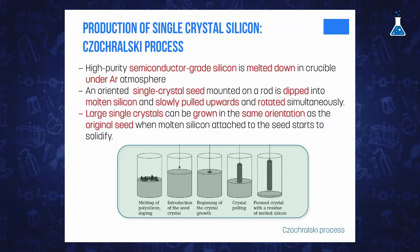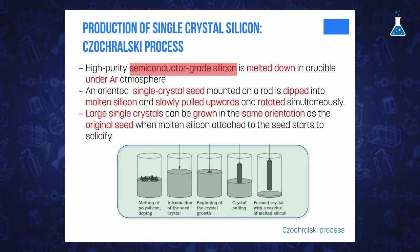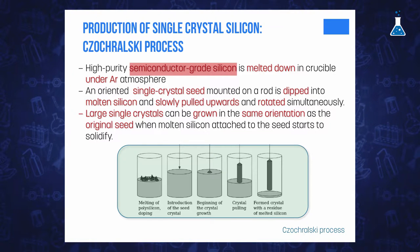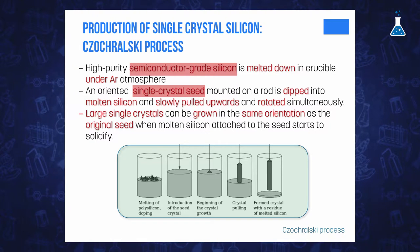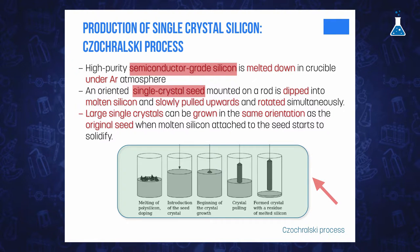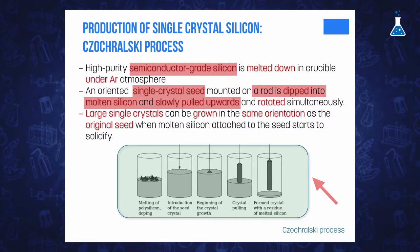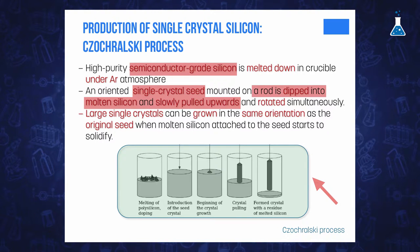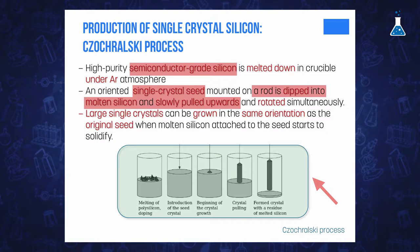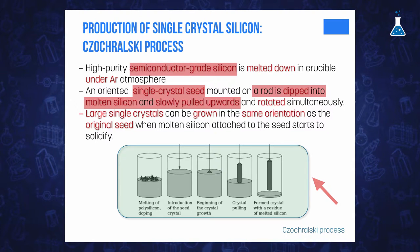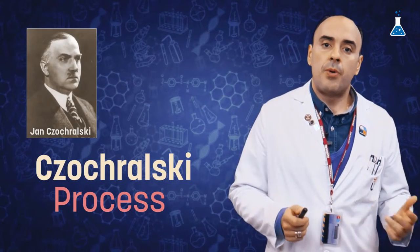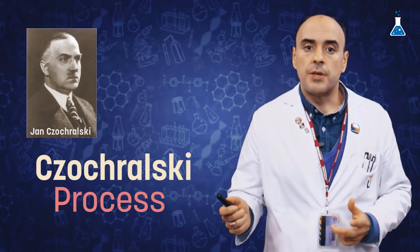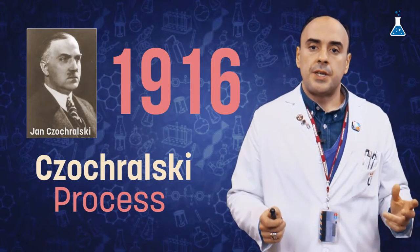The first process consists of melting the high purity semiconductor grade silicon in an atmosphere of argon and employing a single crystal rod as a seed to obtain a large single crystal of silicon. As shown in the following image, the rod is dipped into the molten silicon and slowly pulled upwards and rotated simultaneously. By this process, it is possible to obtain large single crystals with the same orientation as the original seed. This process is called the Czochralski process, after the Polish scientist Jan Czochralski, who invented it in 1916.